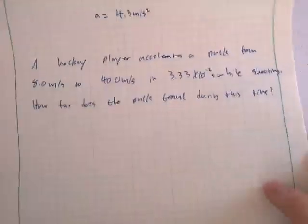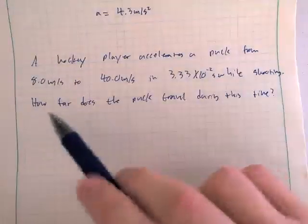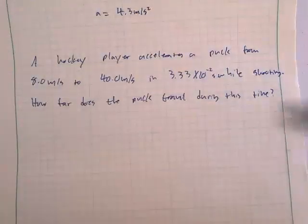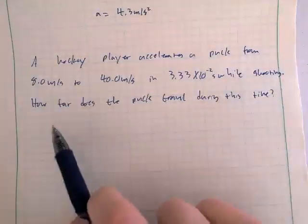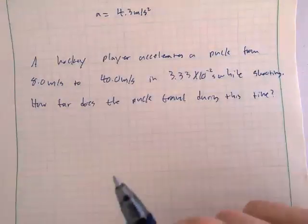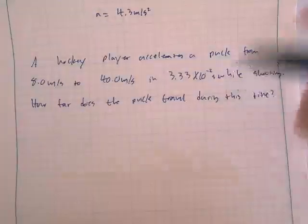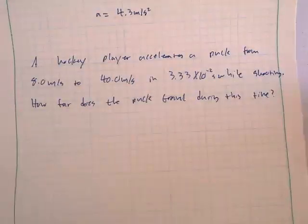Moving on: a hockey player accelerates a puck from 8 meters per second to 40 meters per second in 3.33 times 10 to the negative 2 seconds while shooting. We want to know how far the puck travels during this time. This is a bit more complicated — we need to find a distance, so we'll write down an equation where distance appears.